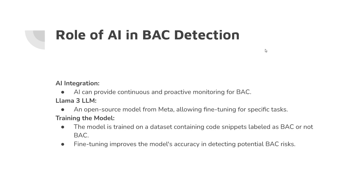This is where we get to the role of AI in broken access control detection. With artificial intelligence integration, we can provide continuous and proactive monitoring for broken access control. We chose our specific LLM, which is LLAMA 3 — an open source model from Meta allowing for fine-tuning for specific tasks. In training this model, we will collect code snippets, probably from GitHub and other open source websites, labeled as BAC or not BAC, following a one-hot encoding scheme. Fine-tuning this LLM will improve the model's accuracy in detecting potential BACs, essentially creating a broken access control detecting specialist.